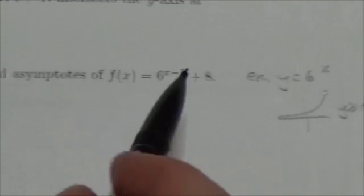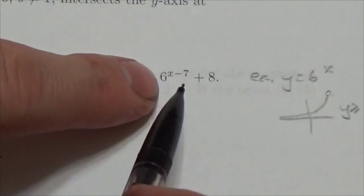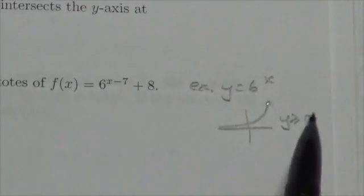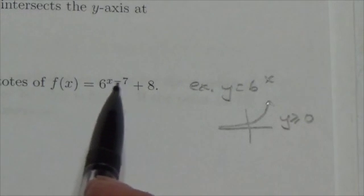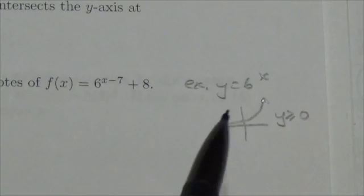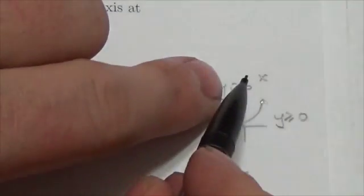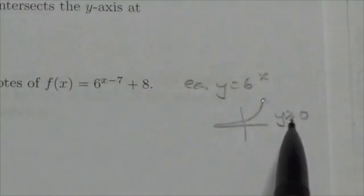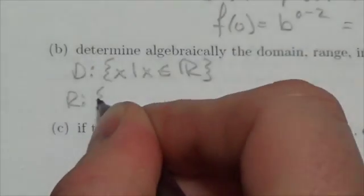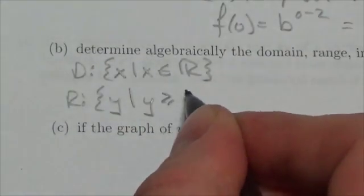Now let's take a look at what we got here. Moving it 7 to the right is not going to change that. A horizontal translation will not affect the range, but a vertical translation will. In this particular case, all we're going to do is move this whole thing 8 units up. So now instead of being greater than or equal to zero, my range here will be a set of y values such that y is greater than or equal to 8.